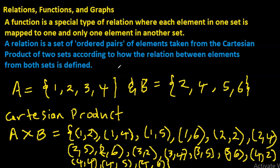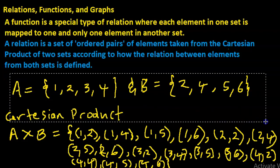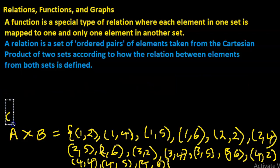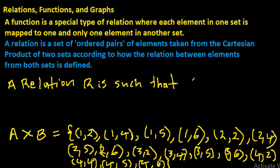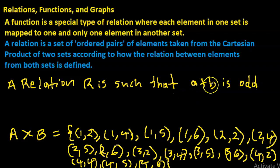So what is a relation? The relation is given — you can make up whatever relation you want. For example, I have A times B and I define relation R such that a plus b is odd. We're saying the relation is such that adding the two elements in a pair gives an odd number.